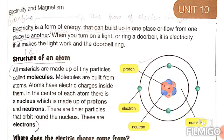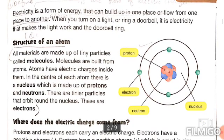Electricity is a form of energy that can build up in one place or flow from one place to another. When you turn on a light or ring a doorbell, it is electricity that makes the light work and the doorbell ring.